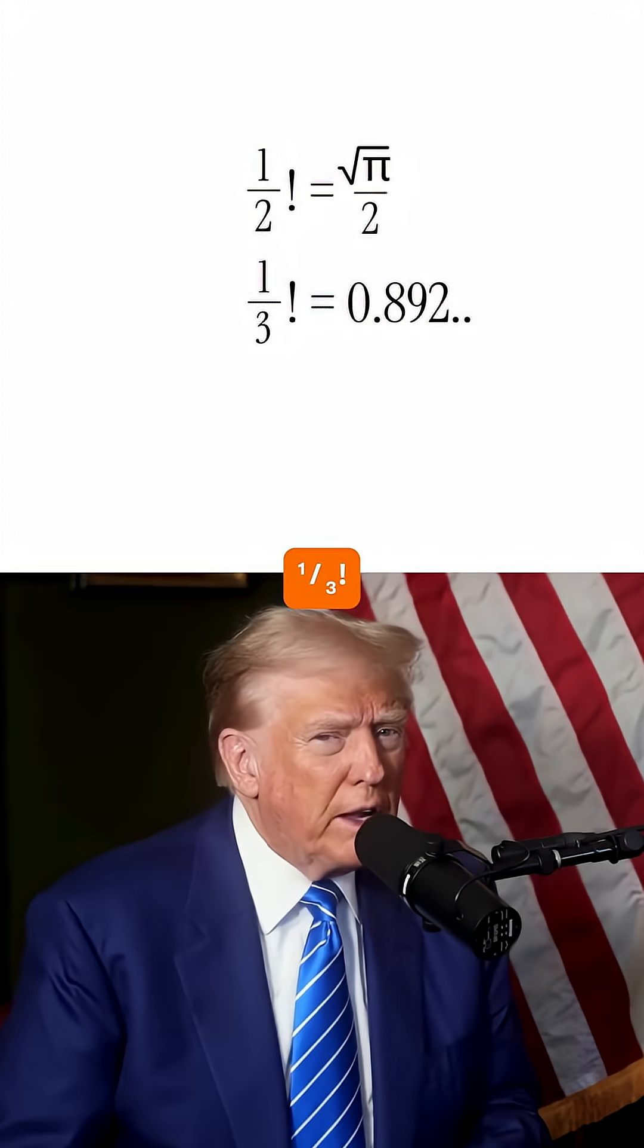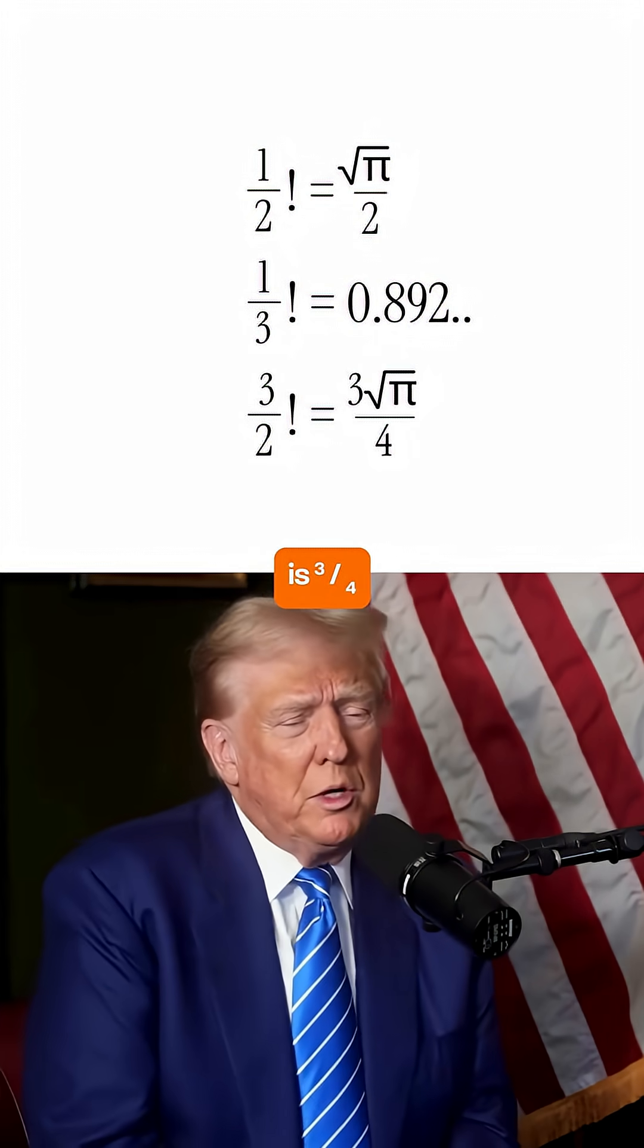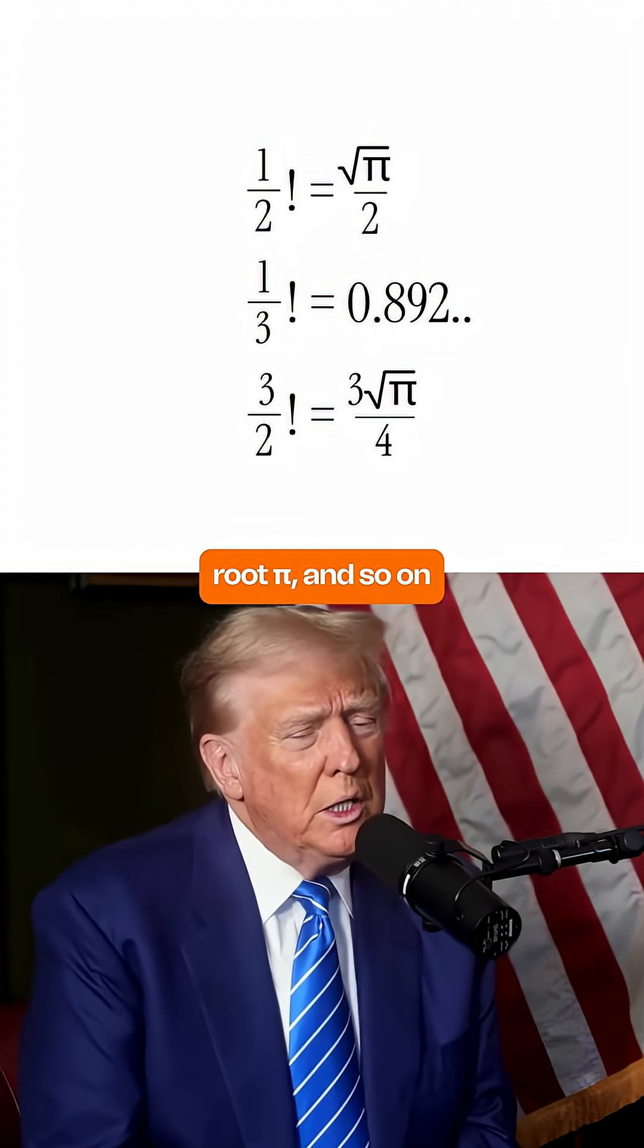Similarly, 1 by 3 factorial is 0.892, and 3 by 2 factorial is 3 by 4 root pi, and so on. Got it.